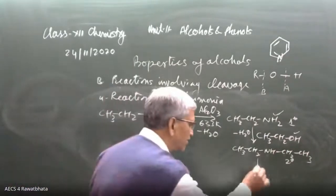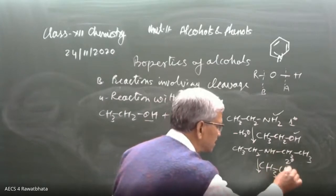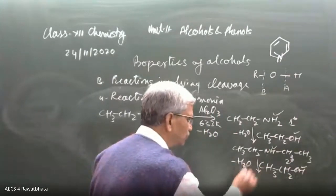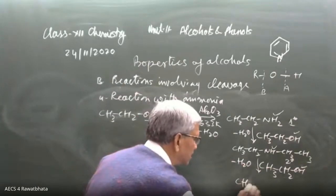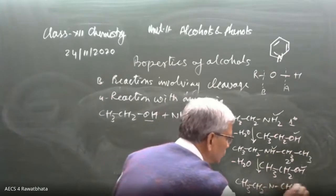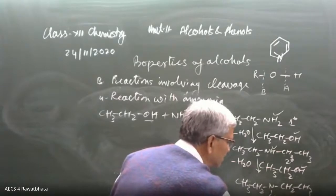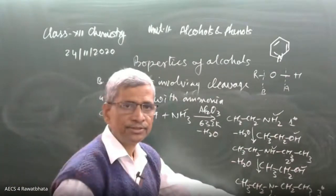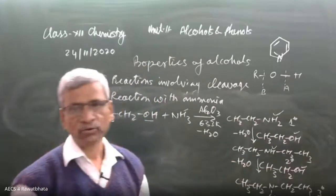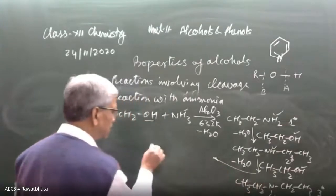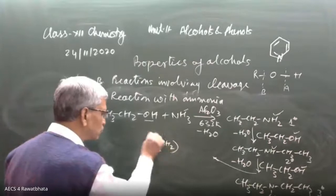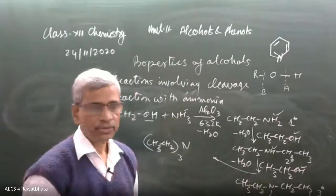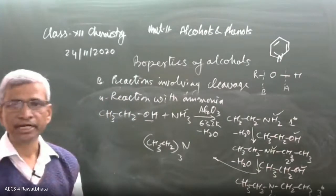The 1° amine CH₃CH₂NH₂ combines with CH₃CH₂OH, and another H₂O is eliminated to give CH₃CH₂NHCH₂CH₃ — a 2° amine, because nitrogen is connected to two carbon groups. This 2° amine further reacts with one more molecule of alcohol to give (CH₃CH₂)₃N — a 3° amine. Thus a mixture of primary, secondary, and tertiary amines is obtained.